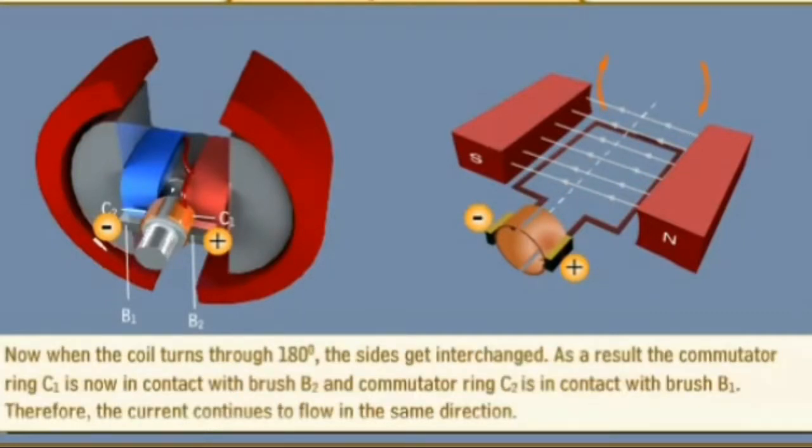When the coil turns through 180 degrees, the sides get interchanged. As a result, the commutator ring C1 is now in contact with brush B2, and commutator ring C2 is in contact with brush B1.